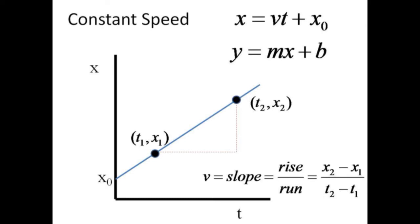Linear relationships may be represented as straight lines on a graph. If position is plotted on the vertical axis and time is plotted on the horizontal axis, we may compare with the slope-intercept form of the equation of a straight line.